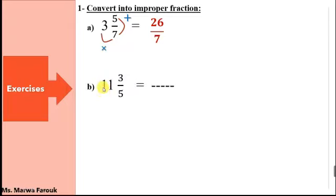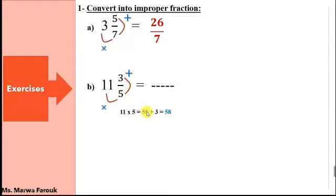Next one: 11 and 3 fifths. Multiply then plus. 11 times 5, then I'm going to add the result to 3. 11 times 5 equals 55, and 55 plus 3 equals 58. This is the new numerator and the denominator is still the same. So we got 58 over 5.